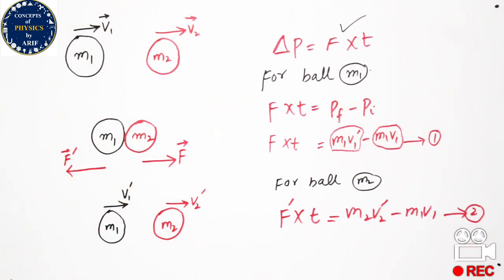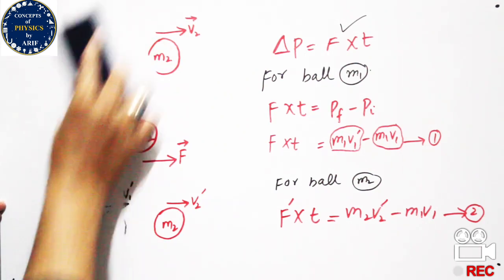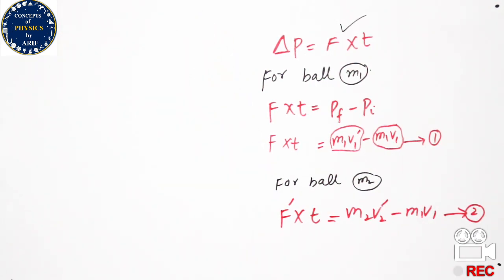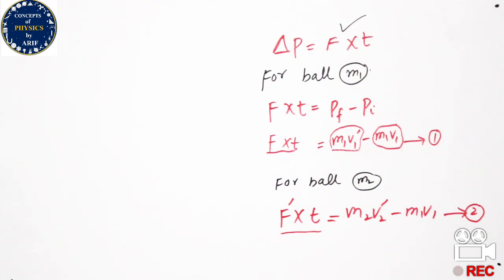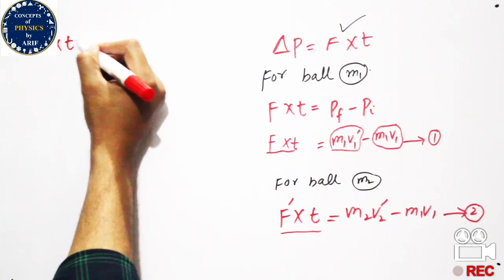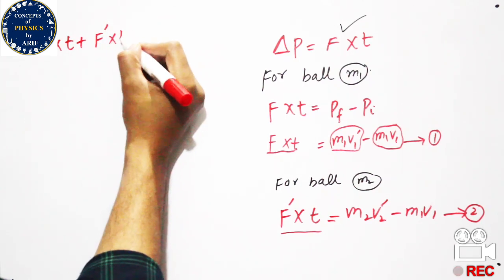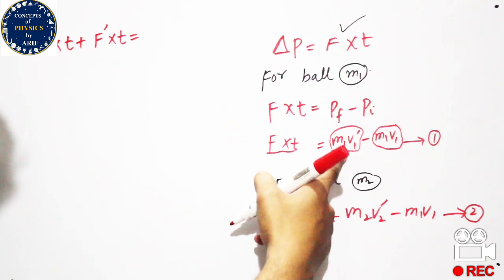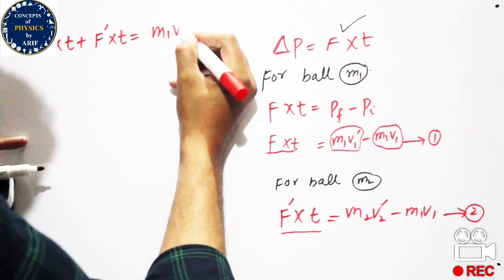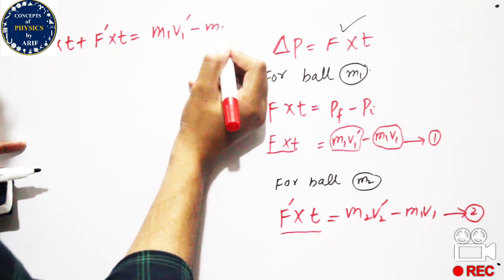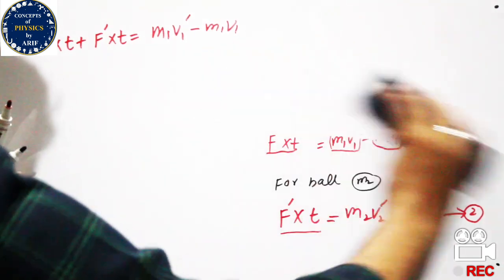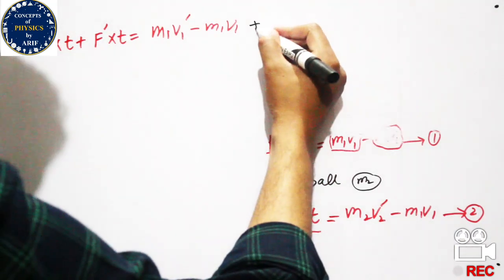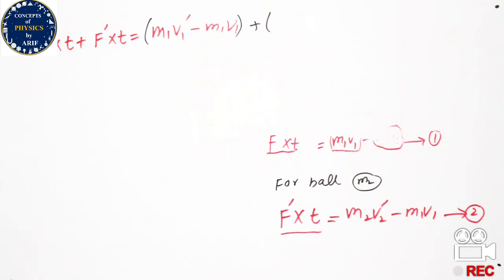We will equate these two expressions in order to find the relationship for the law of conservation of momentum. We add the left side of Expression 1 and the left side of Expression 2: F cross t plus F prime cross t equals m1 v1 prime minus m1 v1, plus the expression for ball 2.